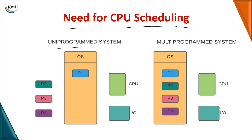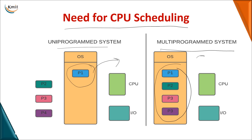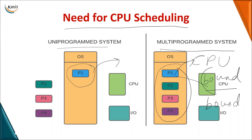When you take a case of a uni-programmed system where you have only a single process, this process will be directly given to the CPU for execution. But when you go for a multi-programmed system where you have multiple processes and only one processor, all the processes cannot be executed by a single CPU. Among these processes, some can be CPU-bound — where CPU burst time is more — and some can be I/O-bound, where the process utilizes input/output resources and CPU usage is very less.